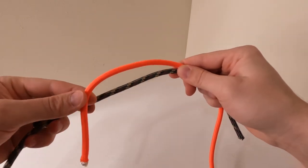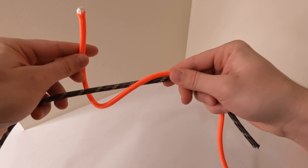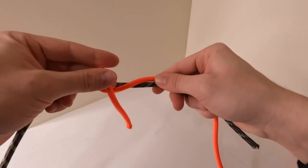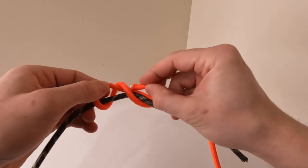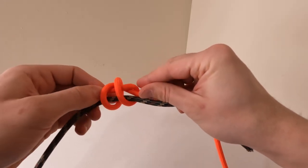You're going to go under and behind and the trick here is to come back towards the standing part essentially making an X and then pulling that working end through the X, dressing the knot by pulling it tight.